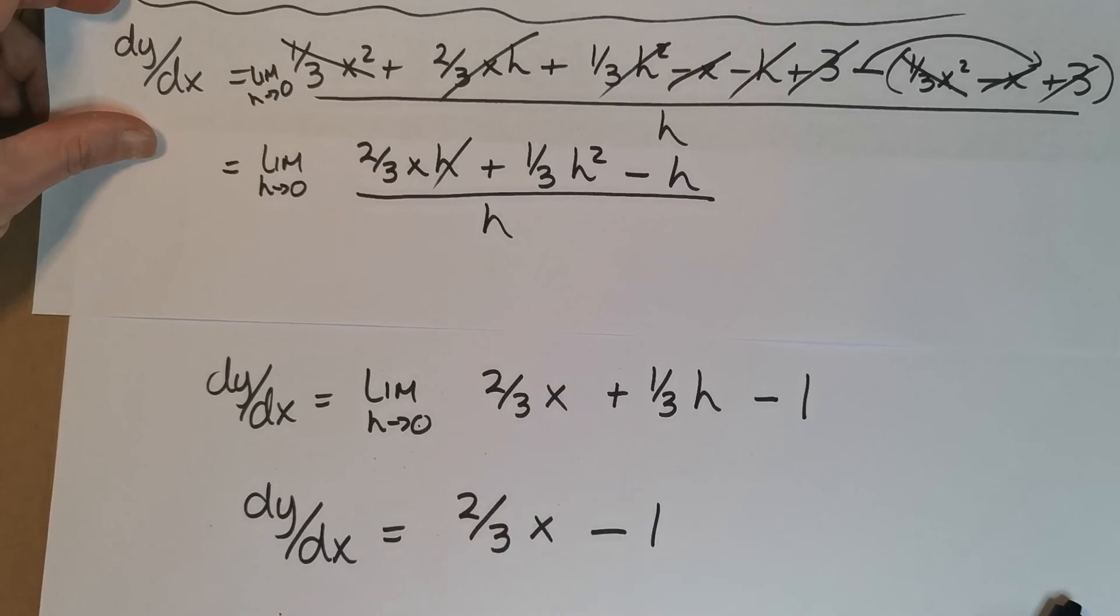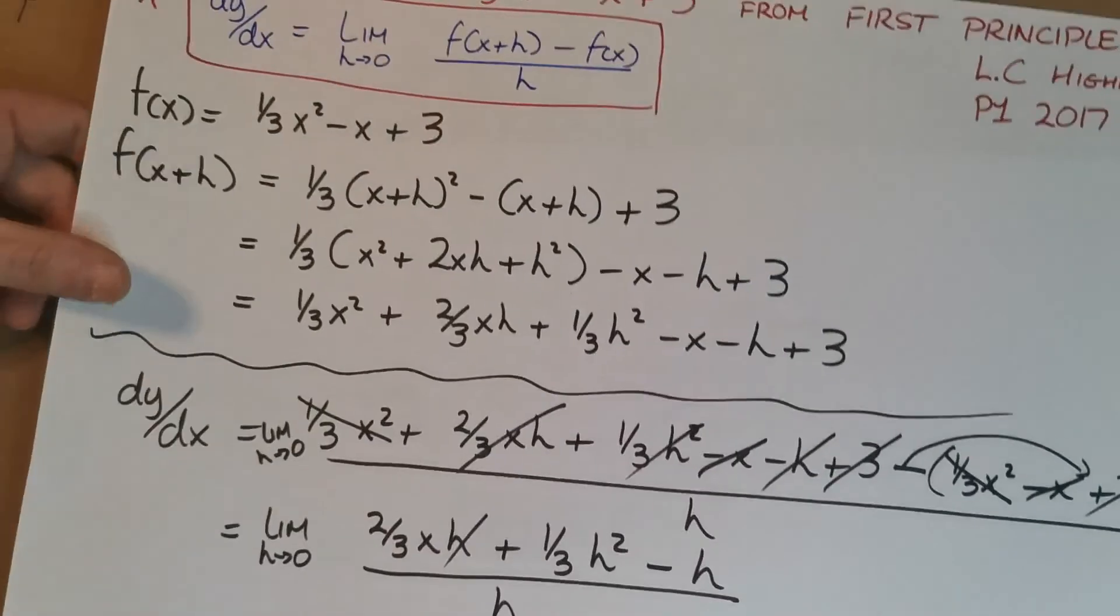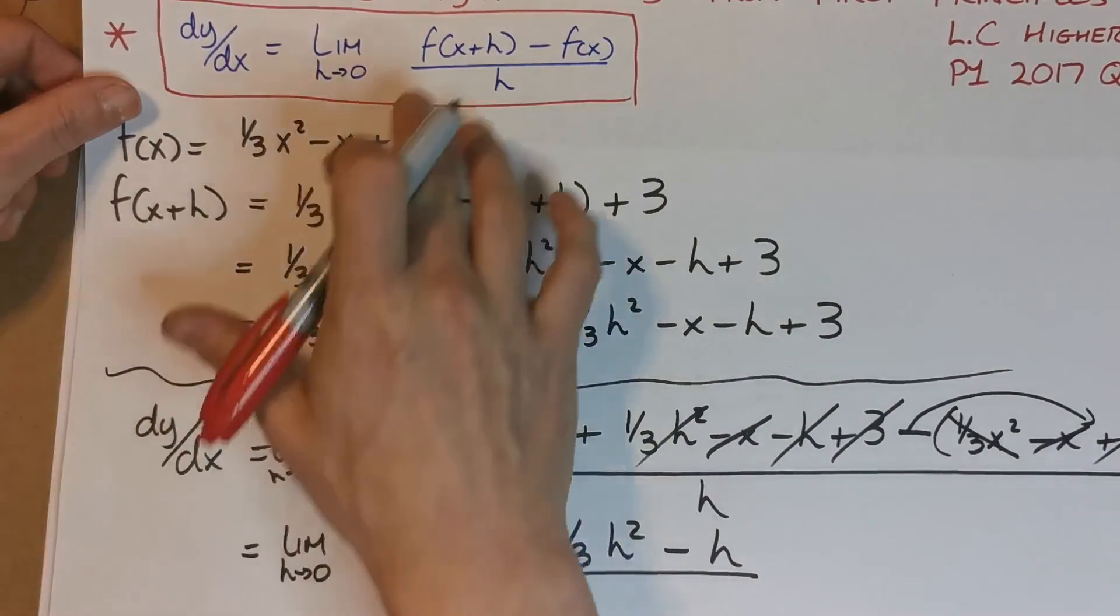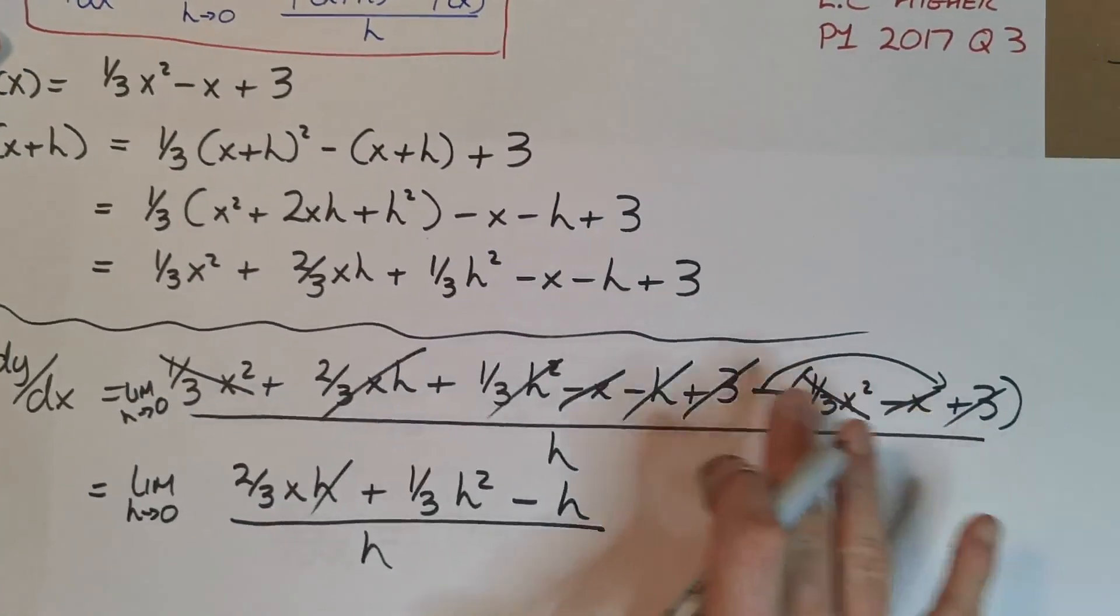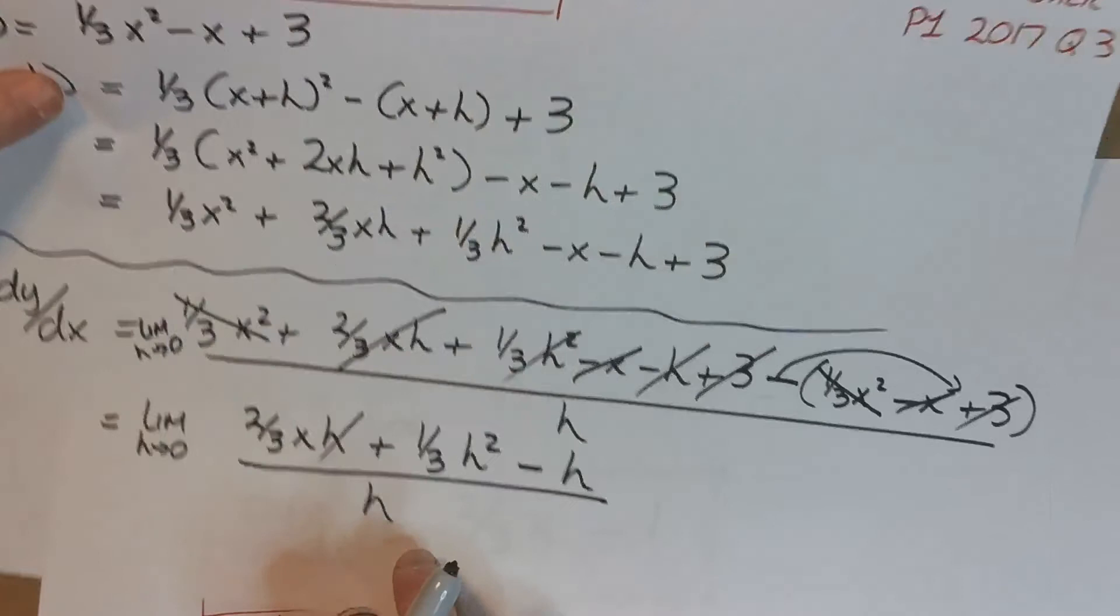So you can see, first off I figured out f(x+h), and then I put it into the formula. Took my time, did a big long algebra equation here, eventually got to the end of this. When we got down to here, then we can start canceling off some of the h's.